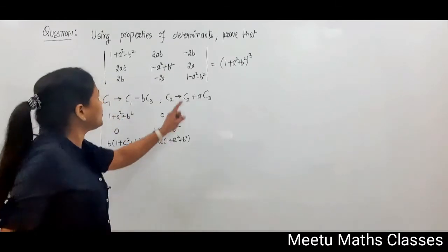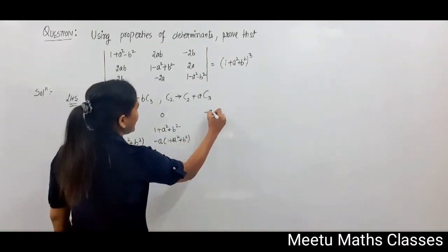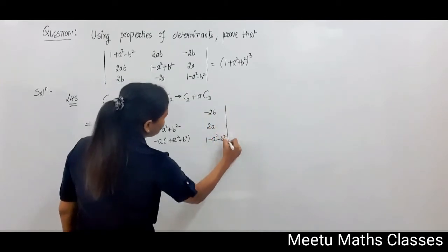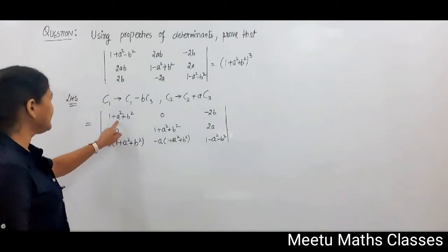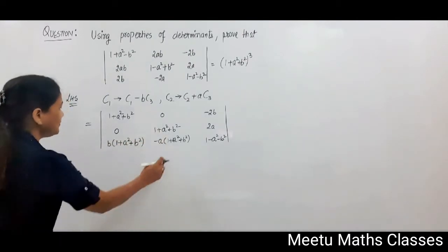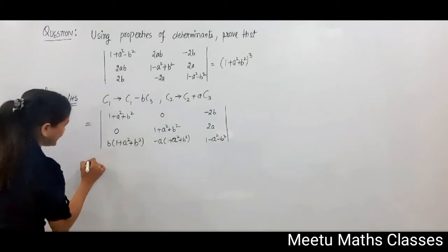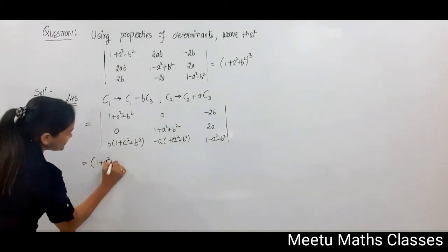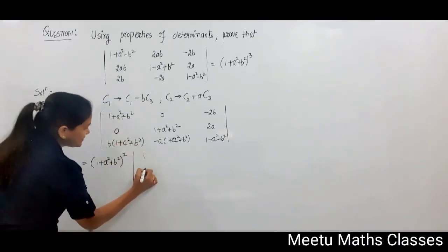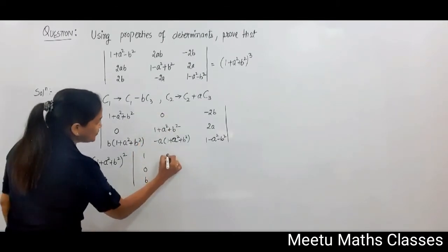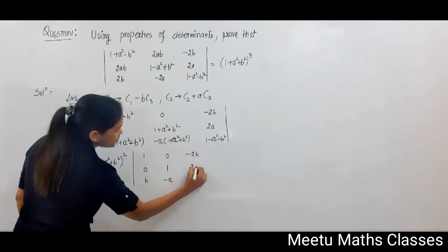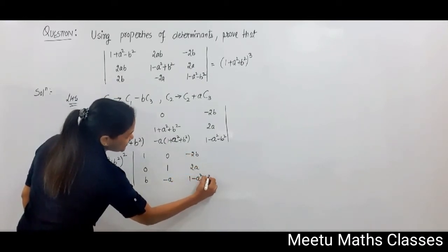Column 2 becomes that. Now column 3 will remain the same: minus 2b, 2a, (1 minus a² minus b²). Now you can take (1 + a² + b²) common from both column 1 and column 2, so the square will come out. What remains is: 1, 0, b; 0, 1, minus a; and column 3 is minus 2b, 2a, (1 minus a² minus b²).